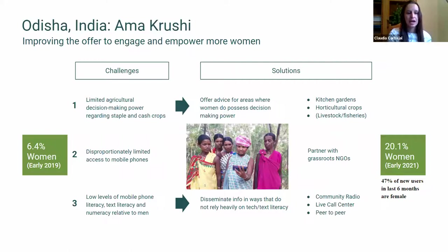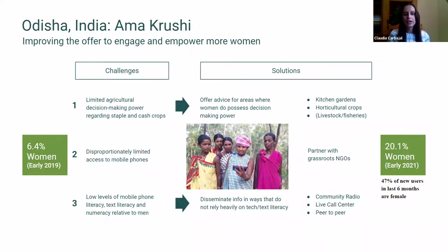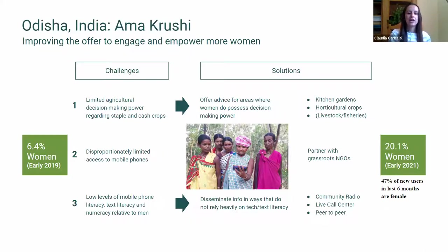To make content different for different users, we want our services to work for all groups — not only the most visible male farmers. In India, we spend a lot of time thinking about gender dynamics. We conducted a detailed analysis through desk and field research and identified three key challenges for women: limited decision-making power on staple and cash crops, limited access to mobile phones, and low levels of mobile phone literacy. We identified solutions targeted to each challenge — content tailored to women in horticulture, livestock, and fisheries where they have more decision-making power, partnerships with non-profits that have programs with women, and disseminating content through platforms that bypass literacy constraints like community radio.